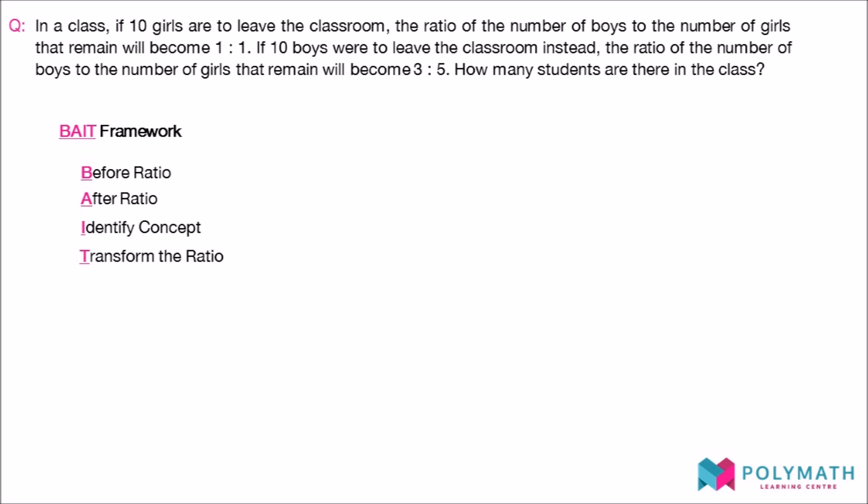We use the BAIT framework to guide us through the four steps required to tackle total unchanged questions. The BAIT framework consists of writing down the before and after ratio, identifying the concept, then transforming the ratio according to the unchanged value.